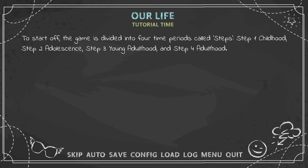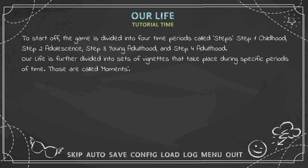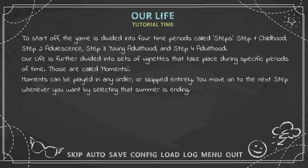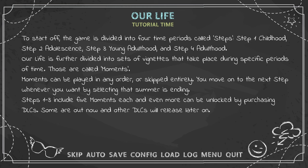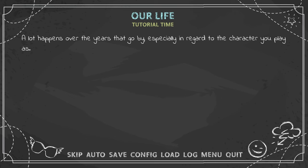The game is divided into four time periods called steps: Step 1 Childhood, Step 2 Adolescence, Step 3 Young Adulthood, and Step 4 Adulthood. 'Our Life' is further divided into sets of vignettes called moments, which take place during specific periods of time. Moments can be played in any order or skipped entirely. Steps 1 through 3 include five moments each, with more unlockable via DLCs. Step 4 is an epilogue and doesn't include moments.